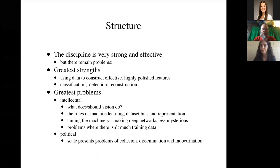So a first very deep problem is what does or should computer vision do? The next problem is the rules of machine learning, data set bias and representation are things that computer vision flagrantly violates all the time and nothing bad happens. So there is something about the rules or something about what we do that needs to be fixed. The machinery we use right now is actually quite mysterious and we need to tame it. It needs to behave in a reasonable engineering fashion.